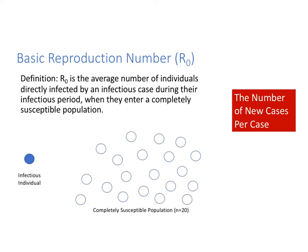To understand the effective reproduction number, I'll first define the basic reproduction number, or R-naught. By definition, R-naught is the average number of individuals directly infected by an infectious case during their infectious period when they enter into a completely susceptible population. You can think of R-naught as the number of new cases per case. Here I'm illustrating an infectious individual coming into contact with a completely susceptible population of 20 people.